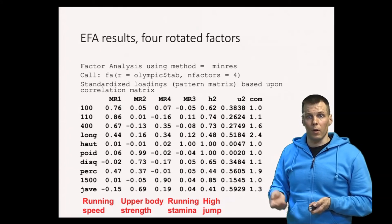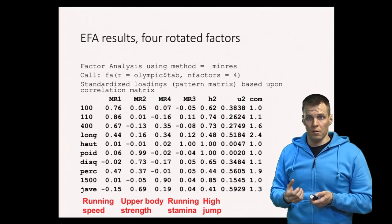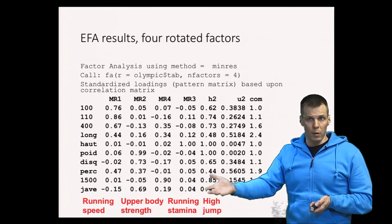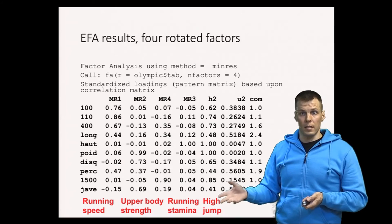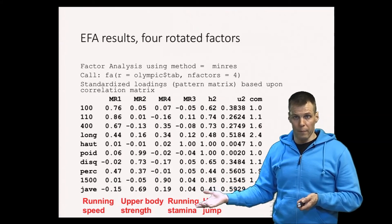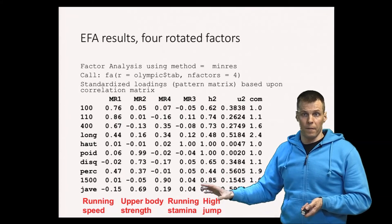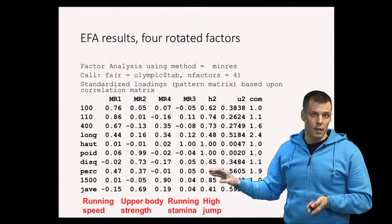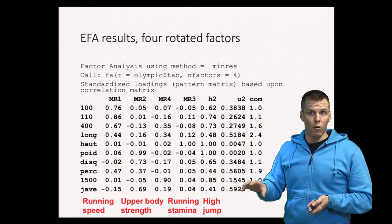In practice, when we apply factor analysis to measurement scales such as surveys, if we want to measure five different things, we set the number of factors to five. Ideally, the factor analysis demonstrates that the indicators correspond to the theoretical constructs they are supposed to measure.